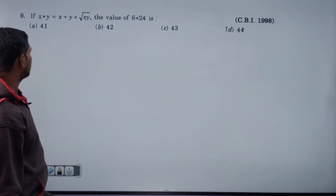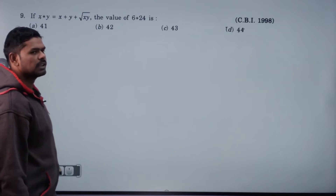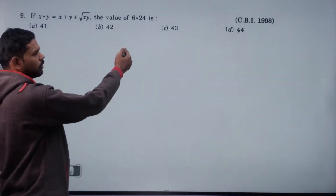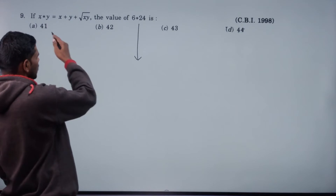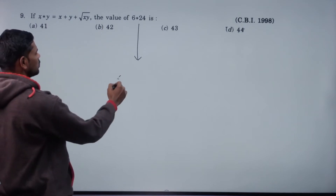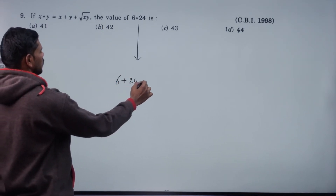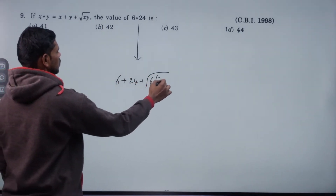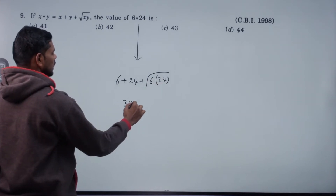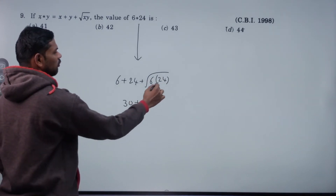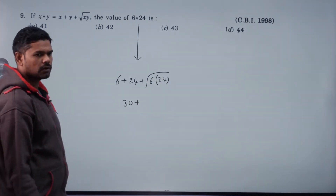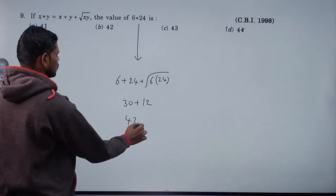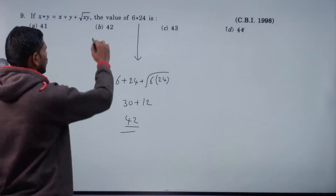x star y equals x plus y plus root xy. Then 6 star 24 equals 6 plus 24 plus root of 6 into 24. 2 add gives 30. Root of 144 value is 12. 30 plus 12 equals 42.